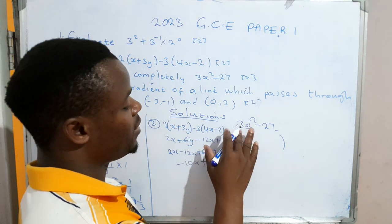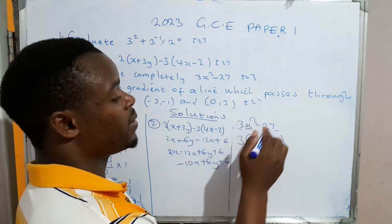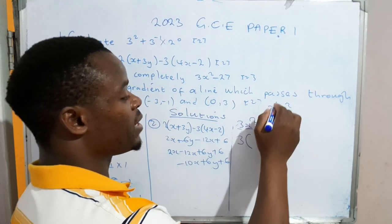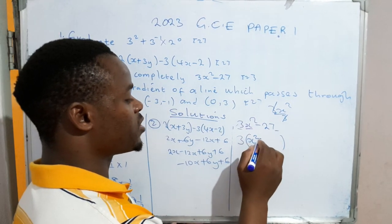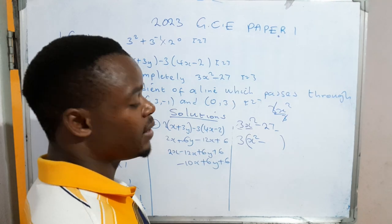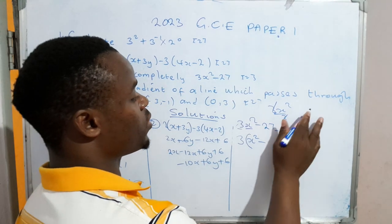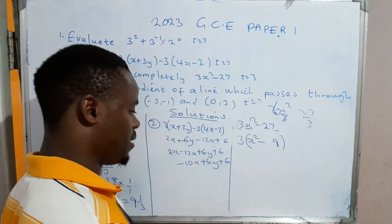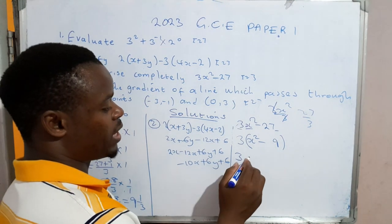We'll say 3 is the common term. When you identify the common term, make sure that you divide it into the terms that you have. 3 into 3x² - that 3 will cancel and we'll have x². Then 3 into 27 gives us 9.